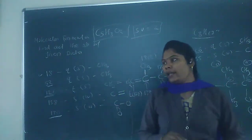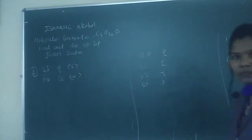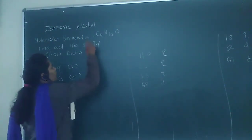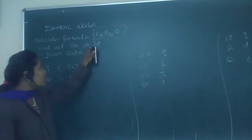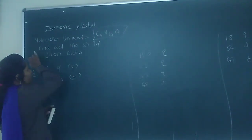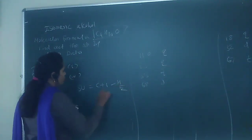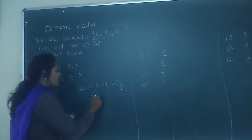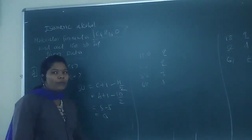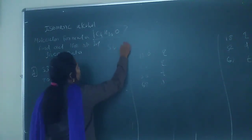Next, we take another example: isomeric alcohols with molecular formula C4H10O. We have to find the structures of different alcohols from carbon-13 data. First, sites of unsaturation: 4 + 1 − 10 / 2 = 5 − 5 = 0. So zero sites of unsaturation.